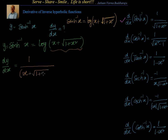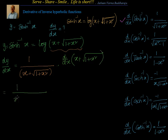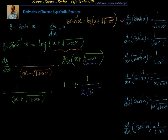The derivative of log of something is 1 by that argument. So I write it as 1 by (x plus square root of 1 plus x square), then multiply by the derivative of (x plus square root of 1 plus x square). The derivative of x is 1. For the square root of 1 plus x square, I apply the chain rule again: the derivative of root(u) is 1 by 2√u, giving 1 by 2√(1 plus x square), multiplied by d/dx of (1 plus x square).